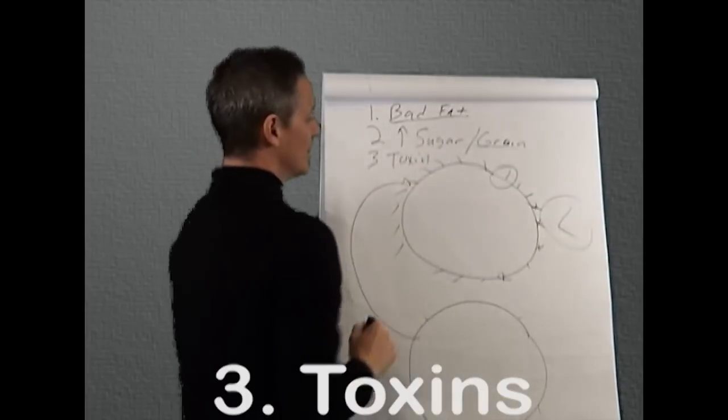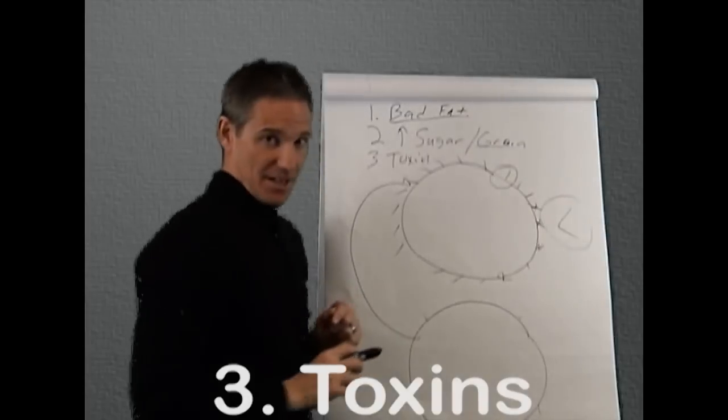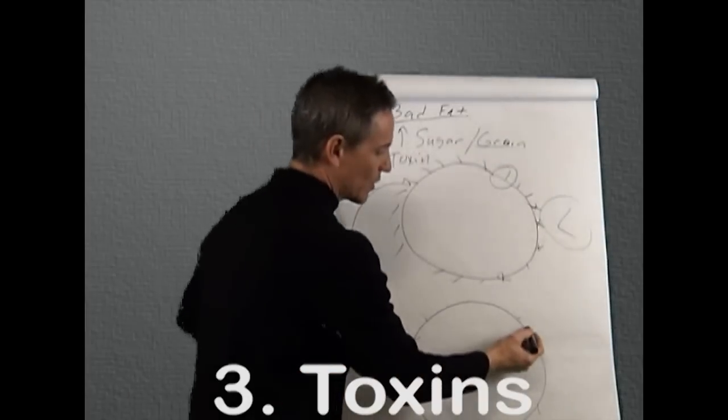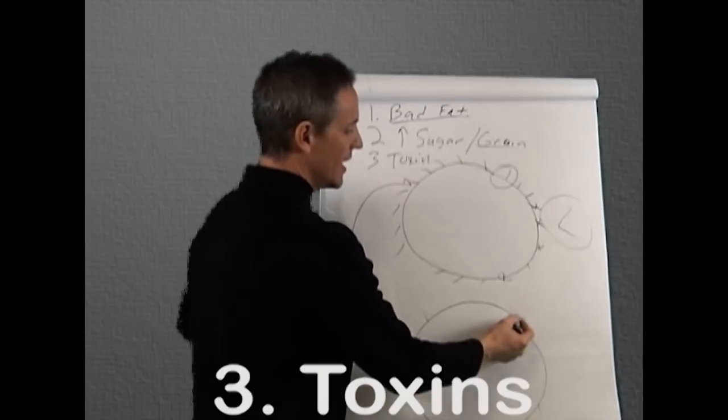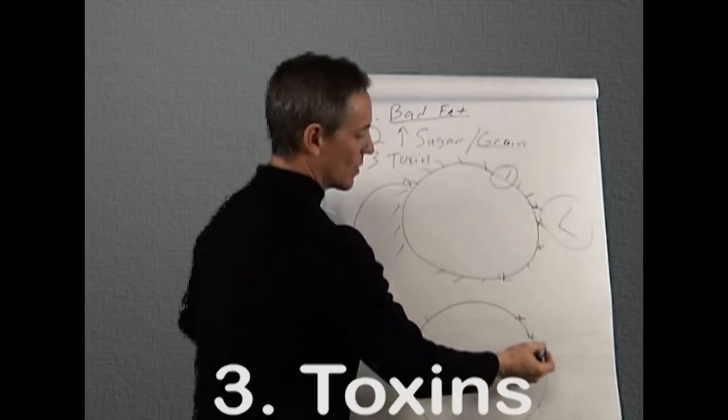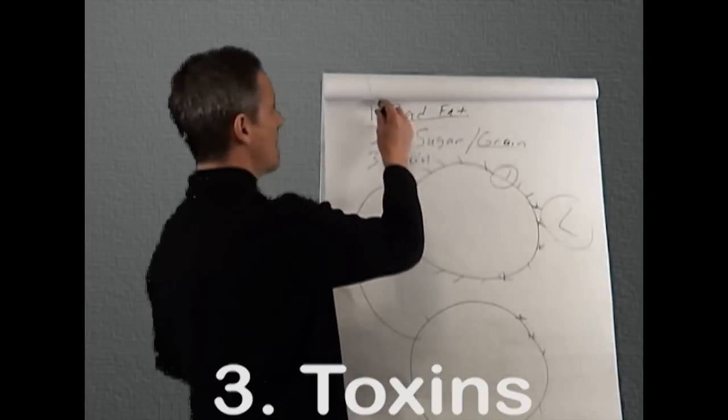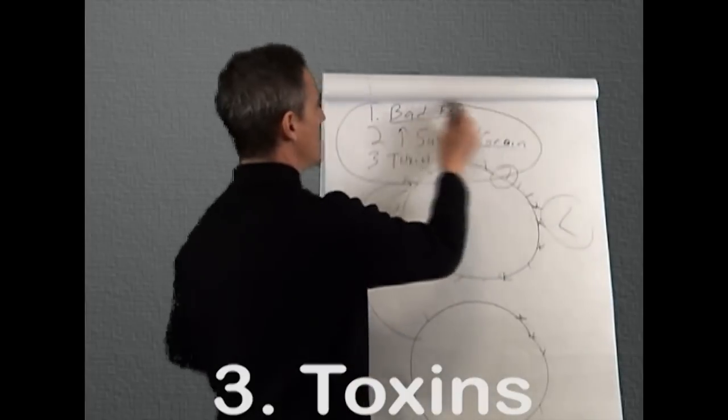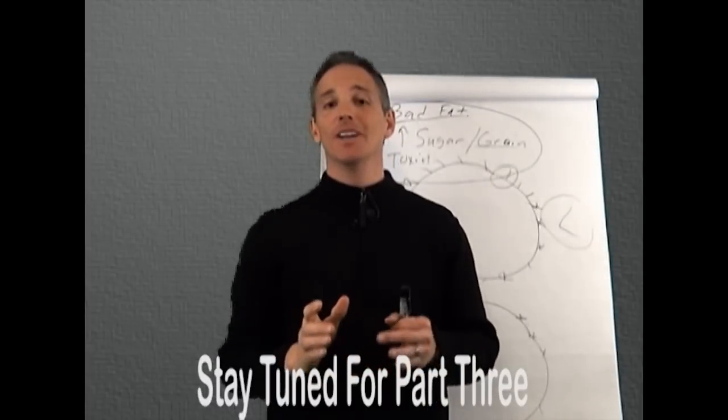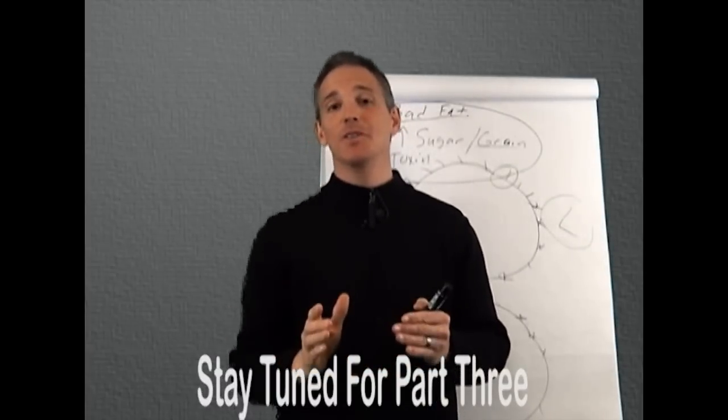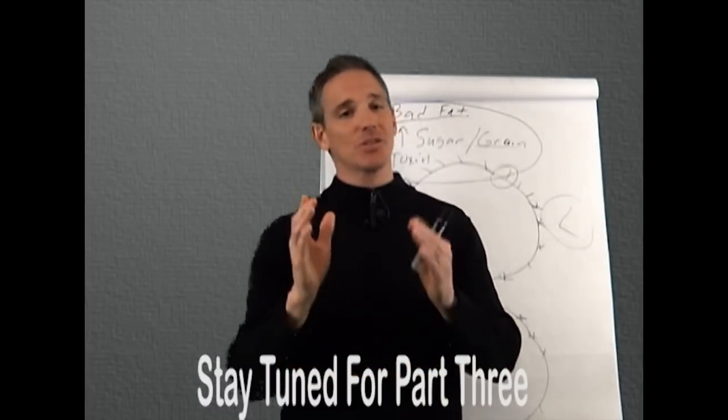And lastly, toxins. All three of these things come in and they make their way to this cell membrane where these hormone receptors are. And they start to blunt these hormone receptors. So next time in part three, we're going to talk about these and get you to understand what you need to do to avoid them and what you need to do to become a fat burner.